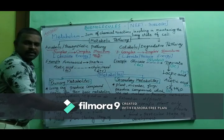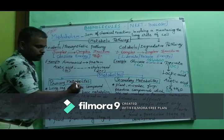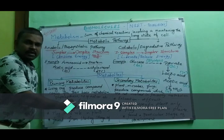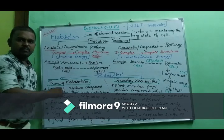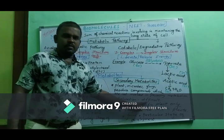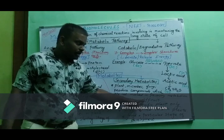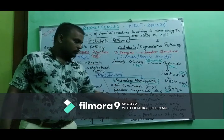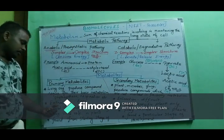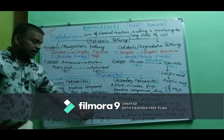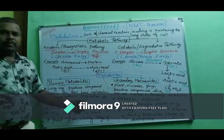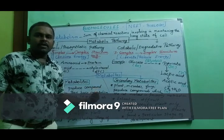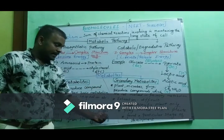Primary metabolites are easier to extract and isolate from the source. Secondary metabolites are harder to extract compared to primary metabolites. Primary metabolites are found throughout the entire plant kingdom because primary metabolism is compulsory for all plants.